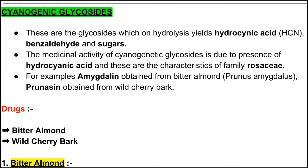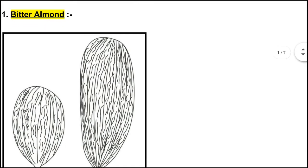For example, amygdalin is obtained from bitter almond, which we call Prunus amygdalus. Prunacin is obtained from wild cherry bark. Regarding drugs under cyanogenic glycosides, we are going to learn about two drugs: first is bitter almond and second is wild cherry bark.